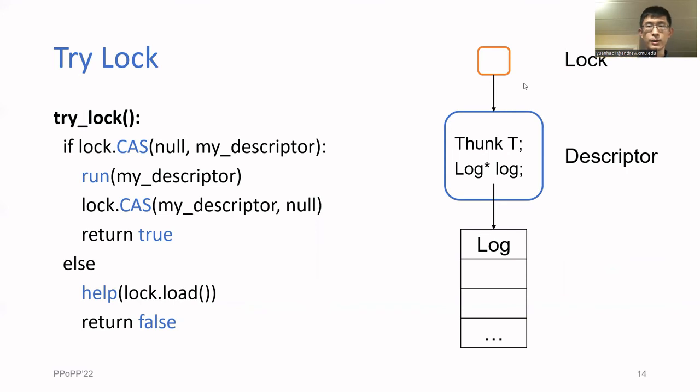The tryLock starts by doing a compare and swap, changing the lock from null to the new descriptor. If it succeeds, it runs this new descriptor and returns true. If it fails, it performs helping and returns false.